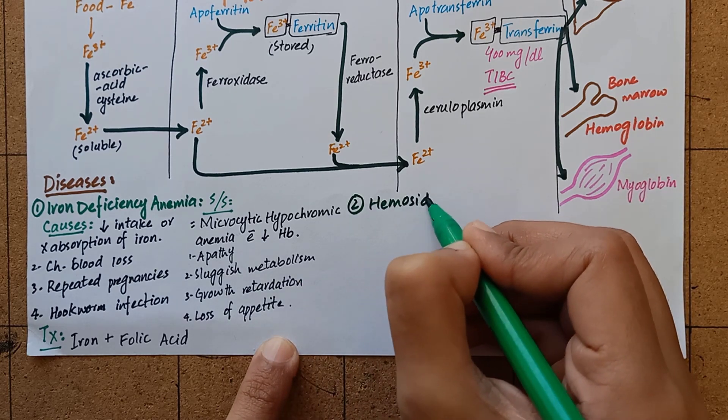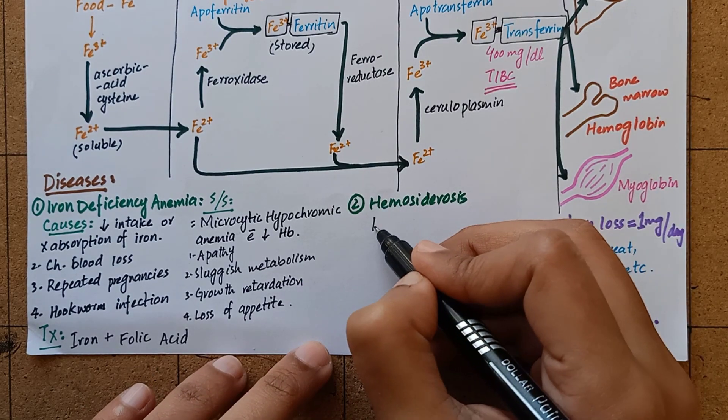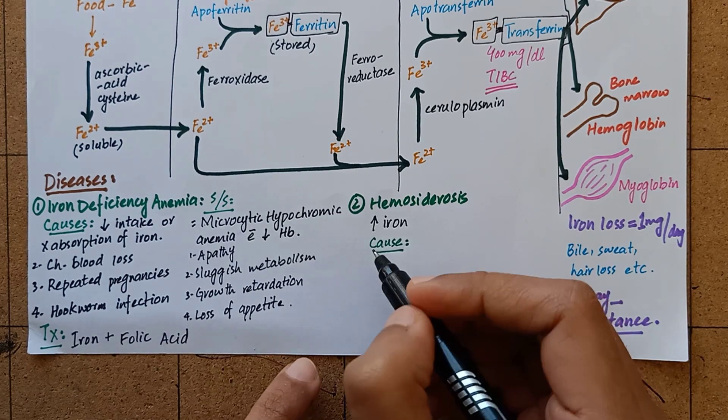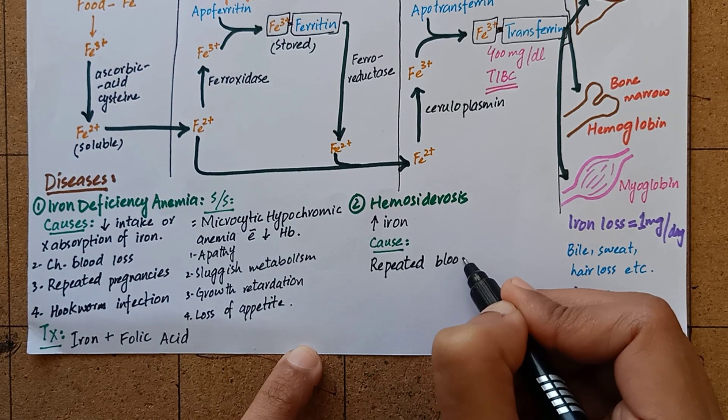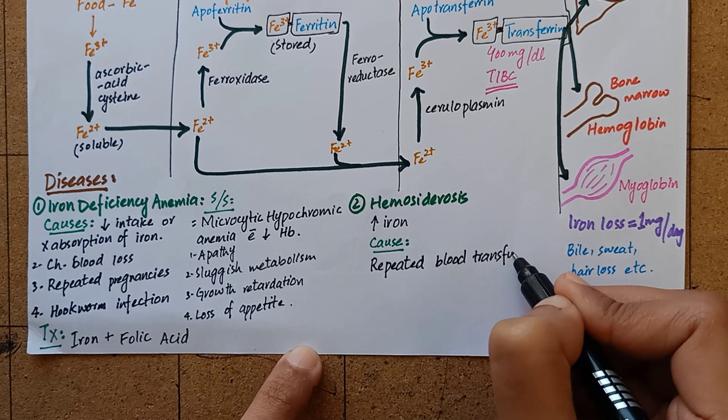Second is hemosiderosis. In this disorder, there is excessive iron in the body. It is commonly caused by repeated blood transfusions like in patients of hemolytic anemia and hemophilia.